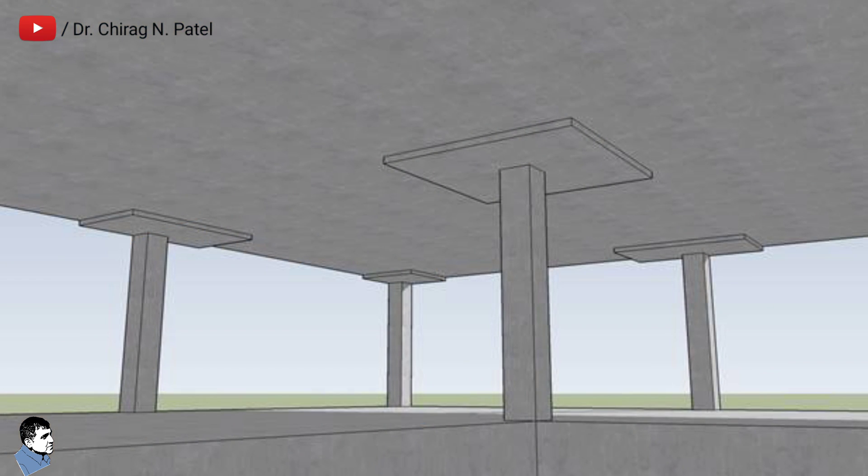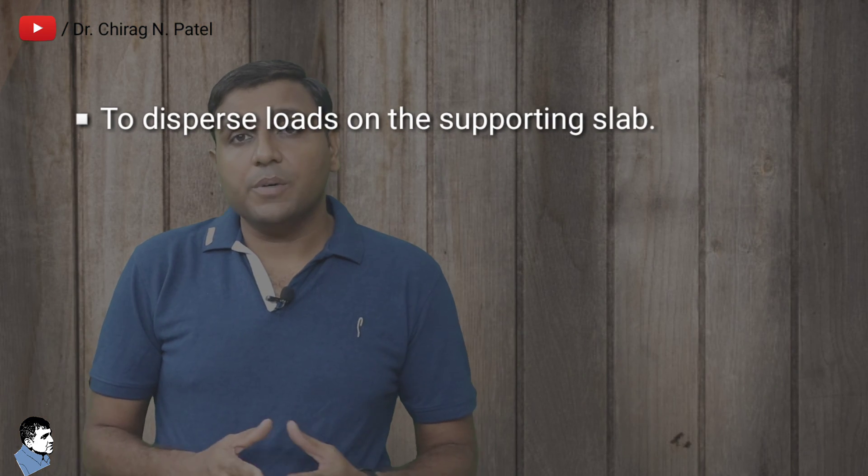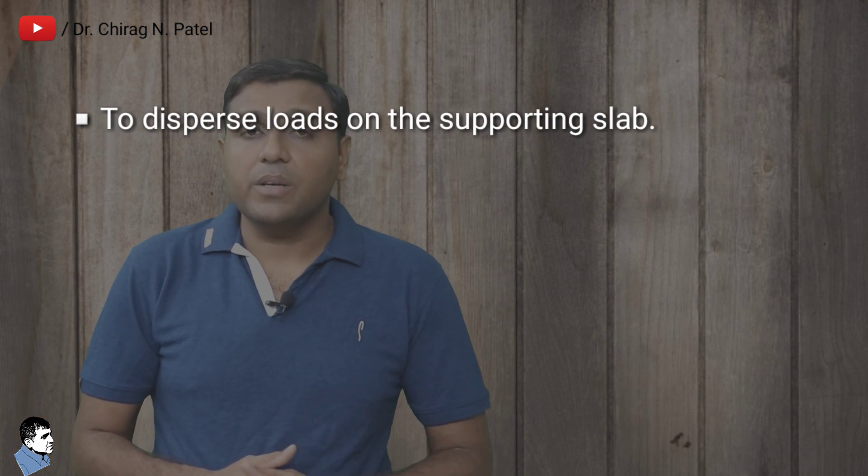They can't be seen after filling the concrete — they are hidden in the slab. Hidden beams are generally inserted within suspended slabs where slab thickness is considerable. The concept of the concealed beam originated from the flat slab concept. They are more applicable in commercial buildings. The purpose of providing a hidden beam is to disperse the load on the supporting slab.